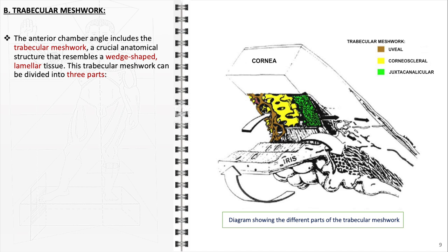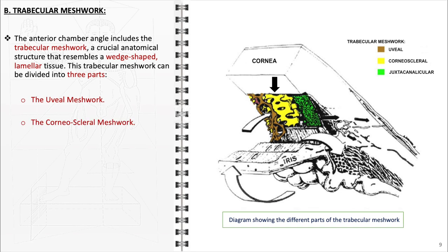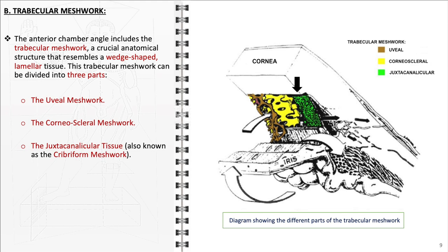The trabecular meshwork is a tiny, spongy structure composed of a network of collagen beams and endothelial cells that resembles a wedge-shaped lamellar tissue. It can be divided into three distinct parts: the uveal meshwork, the innermost layer closest to the center of the anterior chamber, consisting of loose connective tissue with large pores; the corneoscleral meshwork, situated more externally and having a tighter, more compact structure; and the juxtacanalicular tissue, also known as the cribriform meshwork, which is the outermost layer directly adjacent to Schlem's canal, characterized by densely packed collagen and extracellular matrix, and is critical for regulating aqueous humor outflow.